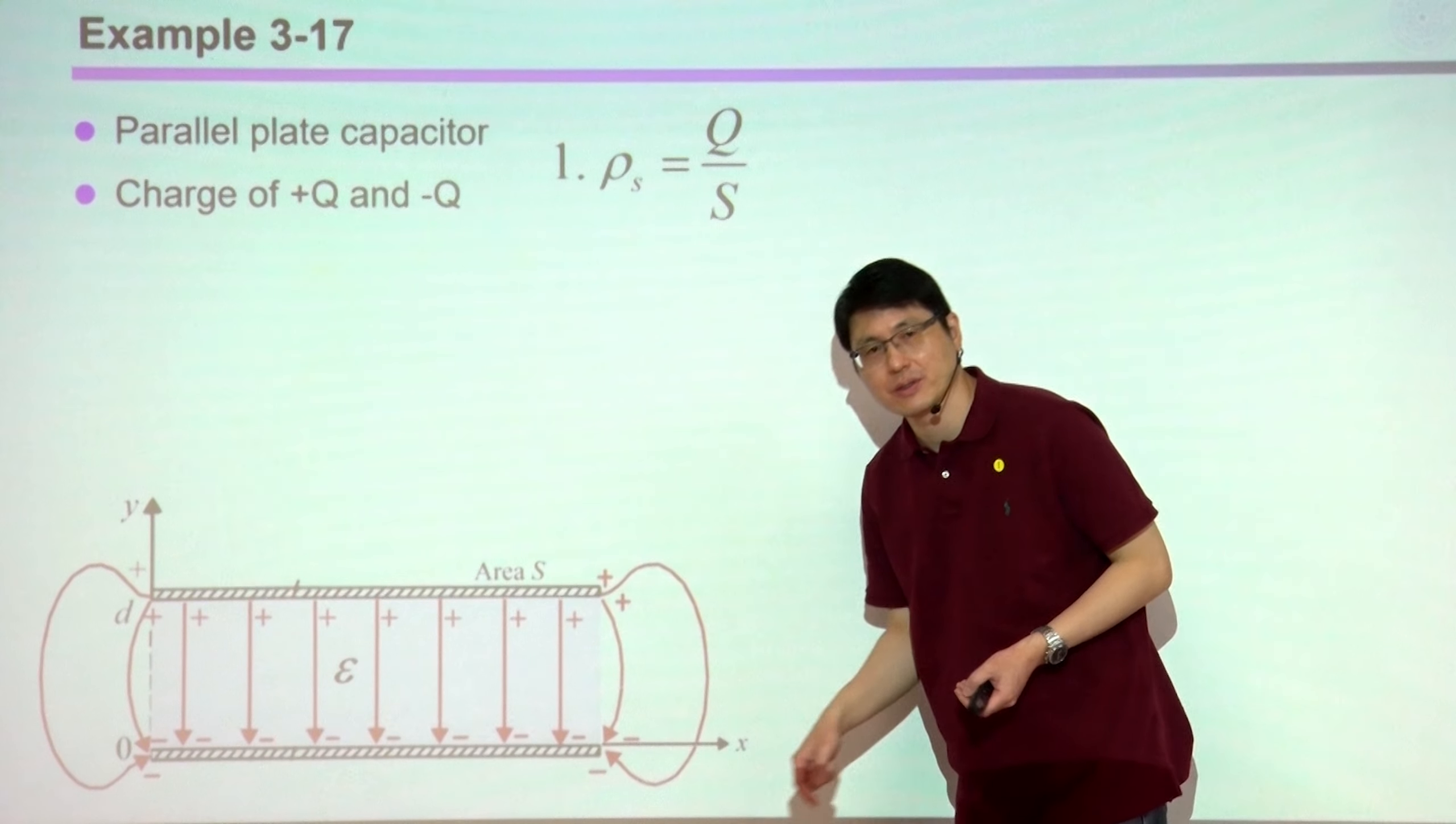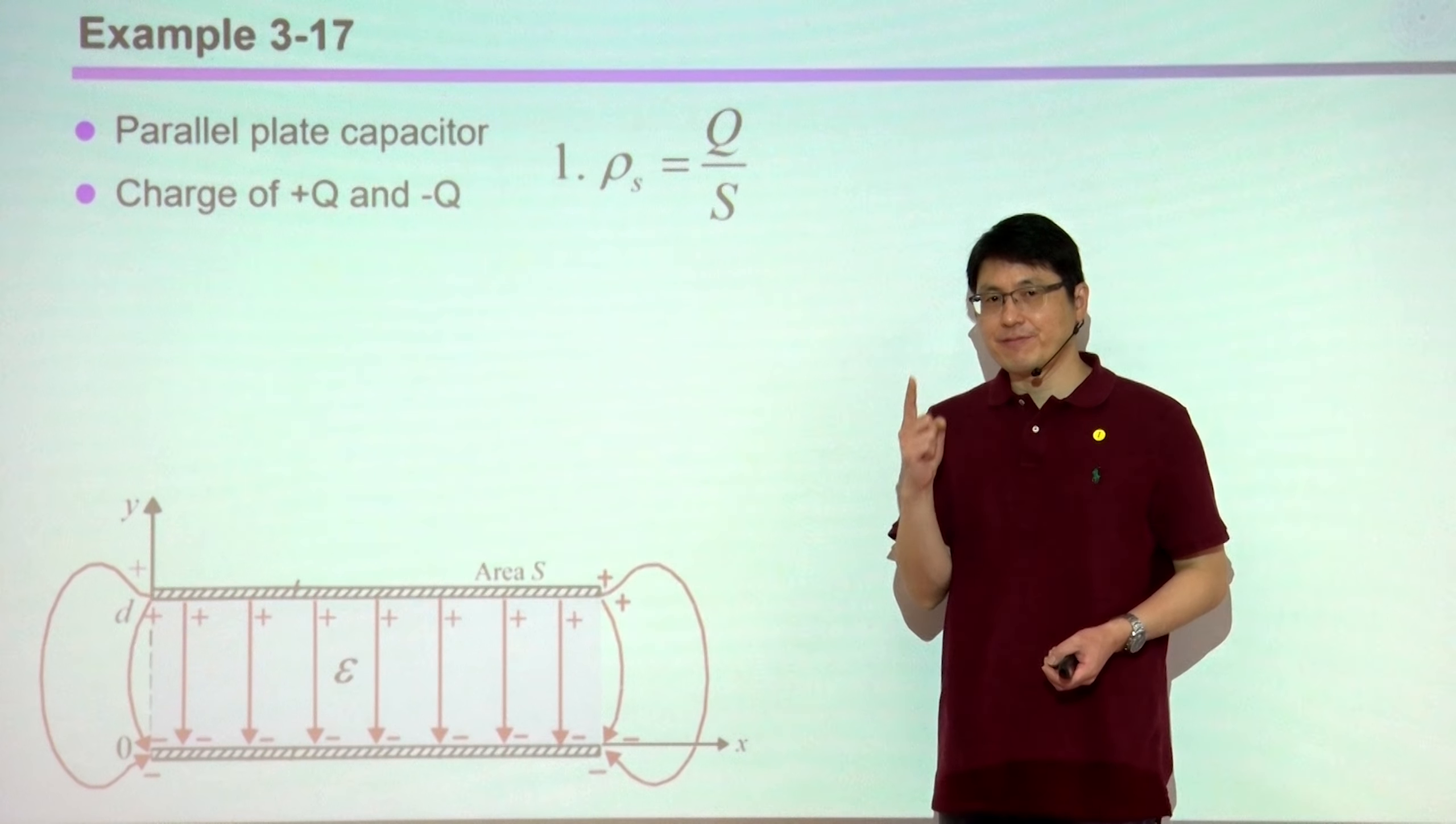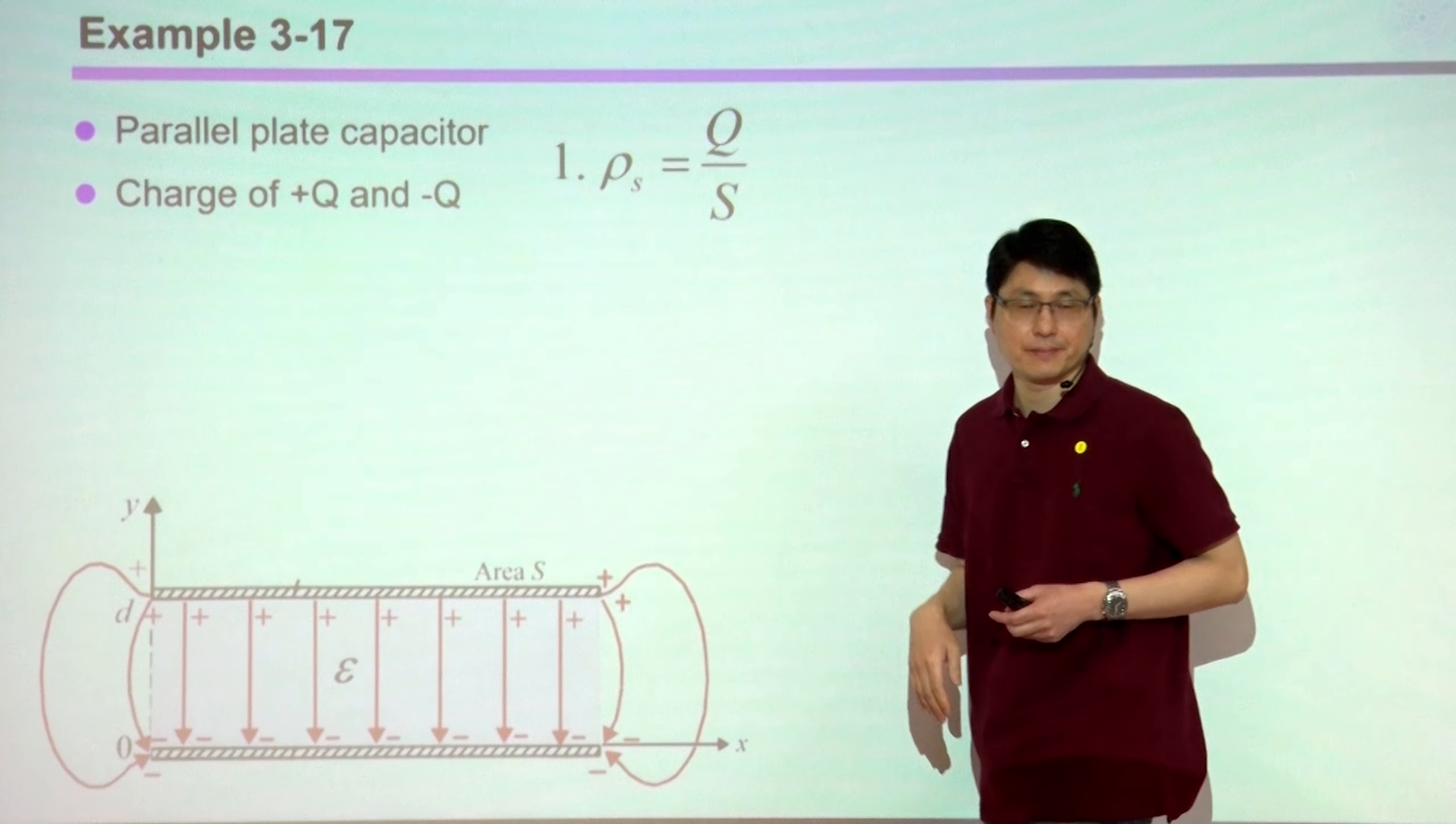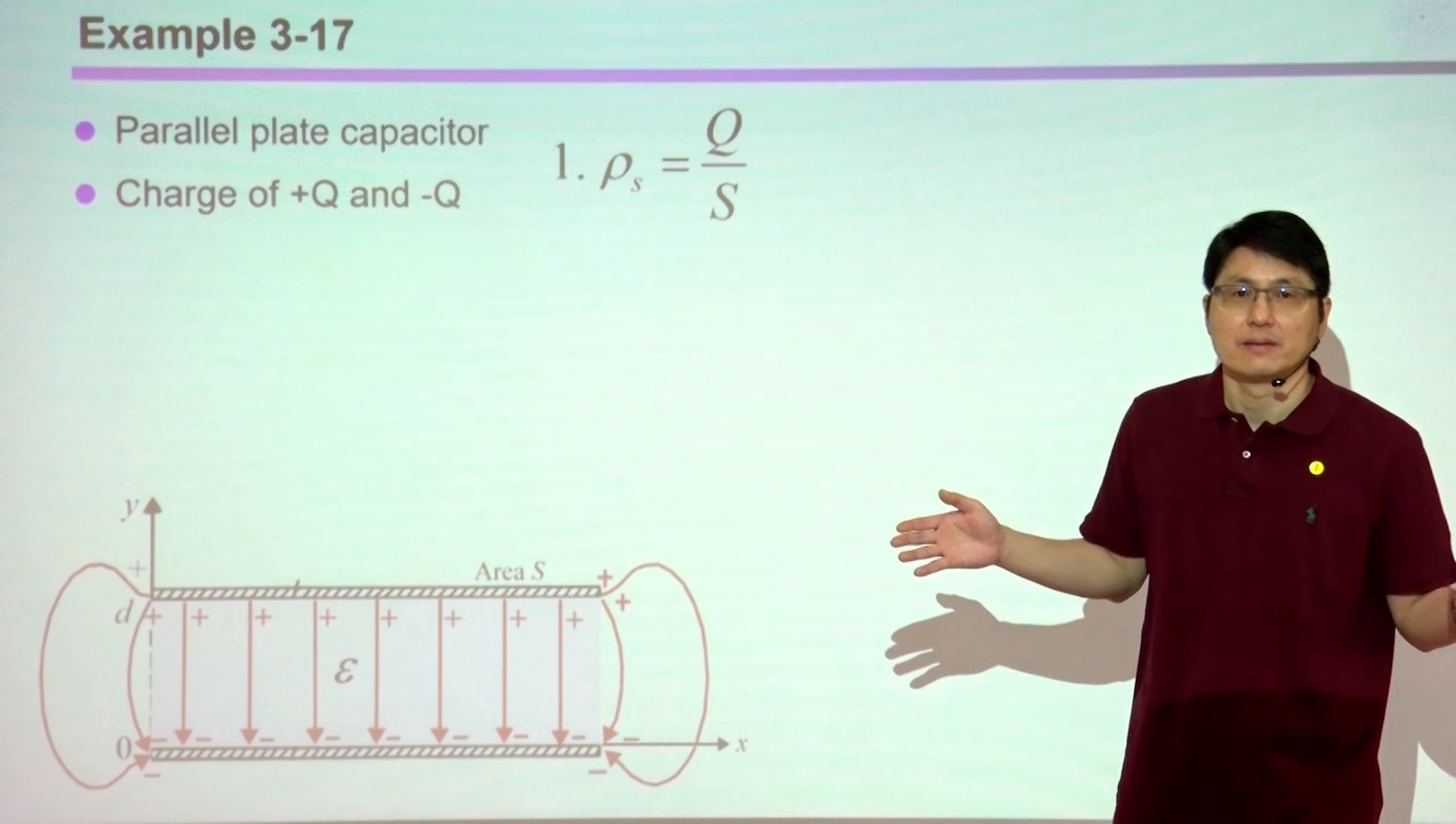the field starts from the positive charge and ends up at the negative charge. So at the edge, your E field intensity would definitely not be a constant, you will be spatially dependent. In all textbooks, we only analyze somewhere in the middle, where you have very uniform and constant E fields. At the edge, we usually don't talk about it. That's why in all the textbooks, we have to assume the plates are very big.